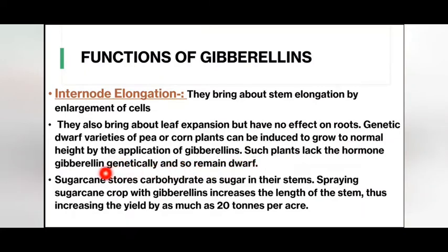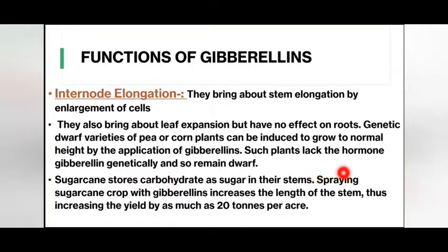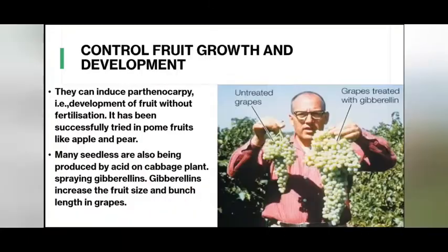Sugarcane stores carbohydrate as sugar in its stems. Spraying sugarcane crops with gibberellins increases the length of the stem, thus increasing the yield by as much as 20 tons per acre.